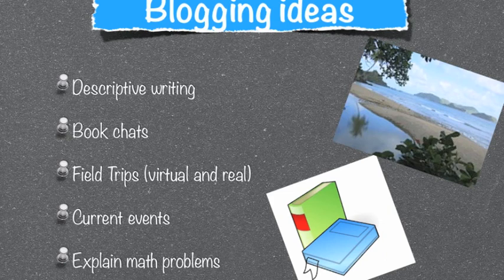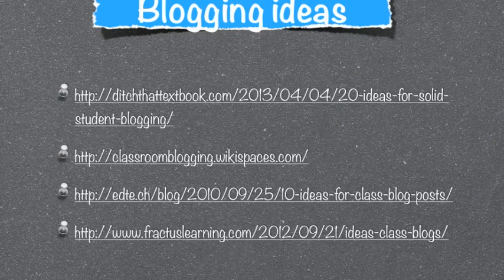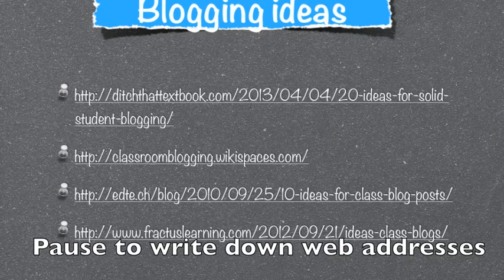Now that you've learned how to create your own class blog on KidBlog, you can now start having your students blog. Here are some different activities your students could do: descriptive writing — post a picture and have the kids write descriptive paragraphs about the picture; book chats — if you're reading a novel in class, have chats about your book; field trips — virtual and real field trips, have the kids blog; current events — take a current event that's mildly controversial and ask the students how they feel about it; or explain math problems. Here are some websites that will give you more ideas on how to incorporate blogging into your class.